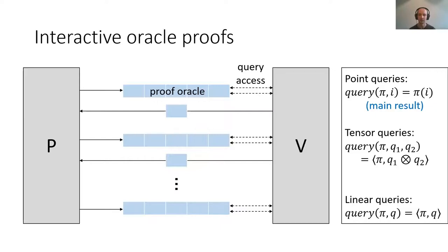There are also linear queries, in which the verifier asks for a linear combination of elements in the proof oracle. And finally, there are tensor queries, in which the verifier asks for a specially structured linear combination of elements in the proof oracle, where the linear combination has to be a tensor product of two different vectors.